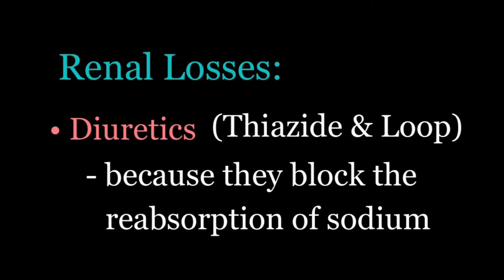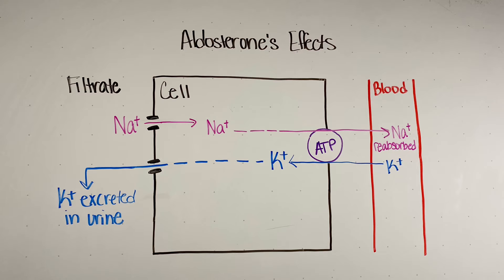As far as renal losses go, thiazide and loop diuretics are the most common culprit. Diuretics block the reabsorption of sodium in the kidneys. If we have a decreased serum sodium level, the body triggers the release of aldosterone. Aldosterone will reabsorb sodium through the sodium-potassium ATPase, and because it uses this pump, it has to secrete potassium into the filtrate. So aldosterone reabsorbs sodium but excretes potassium, and then we will get hypokalemia.